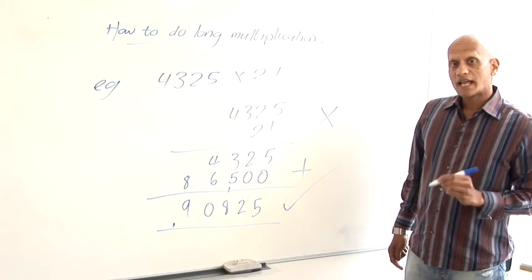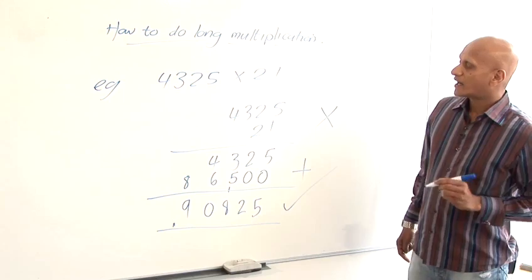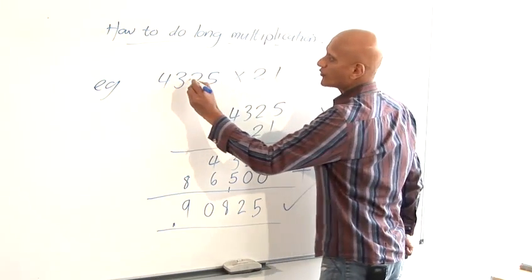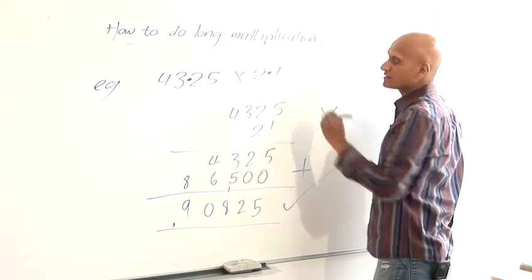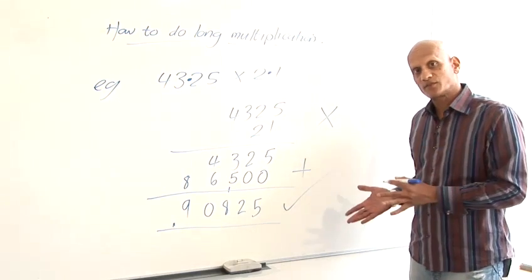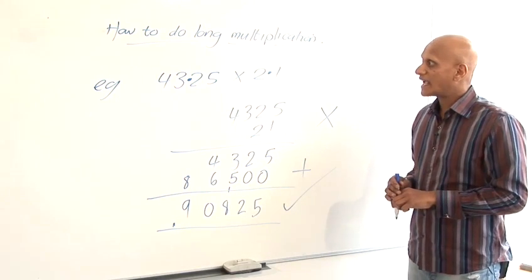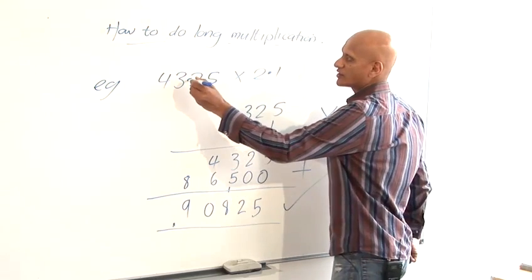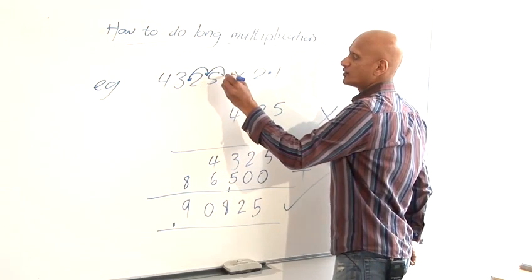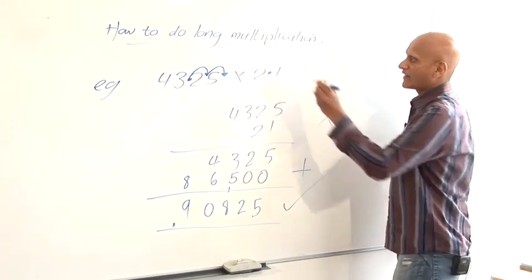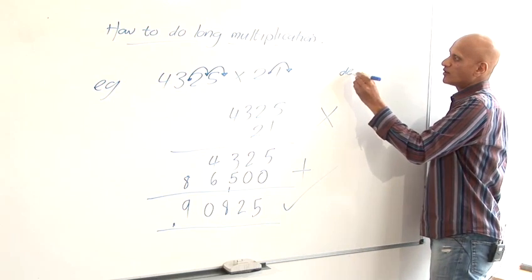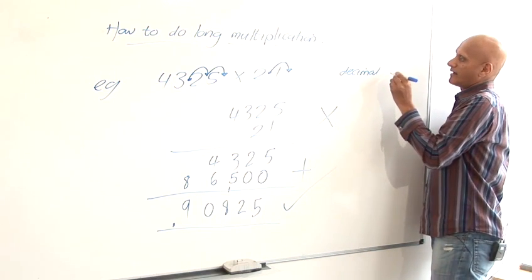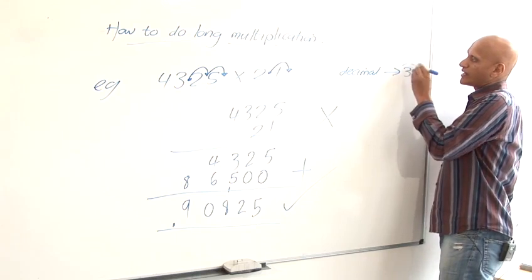Now you could ask this same question in a slightly different way. I could be asked to multiply 43.25 by 2.1. So the same question but with decimals in there. And what I'd do in that case first of all is I'd shift the decimals out. So I'd shift that decimal 1, 2 places to get rid of it and I'd shift that decimal 1 place. So altogether I've moved the decimal that way by 3 places.